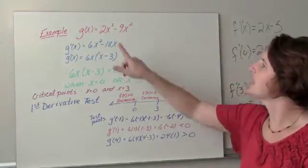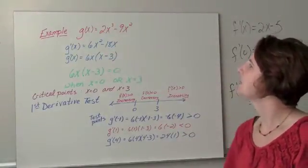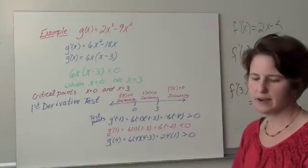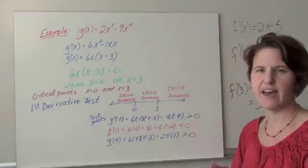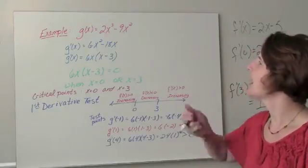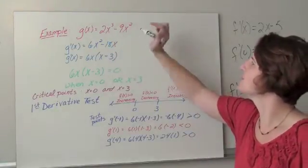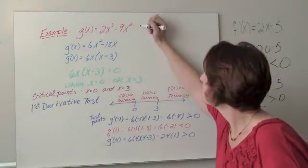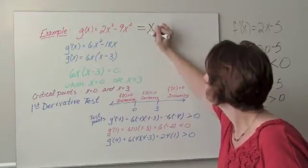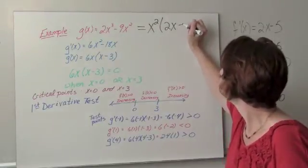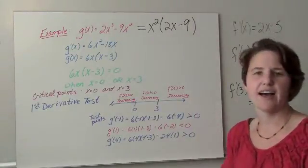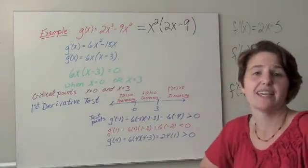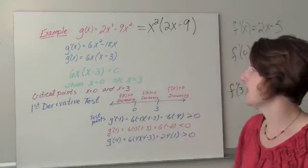Now I have the function g(x) equals 2x cubed minus 9x squared. If I were to graph this function, I'd like to factor that if possible. I notice that both of these terms have an x squared, so this equals x squared times 2x minus 9, and I can find the x-intercepts very easily once I factor.